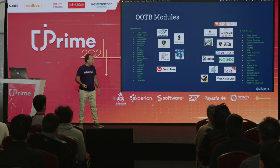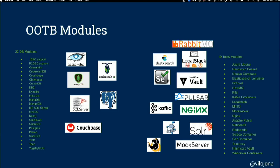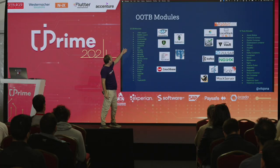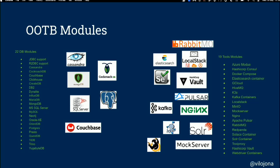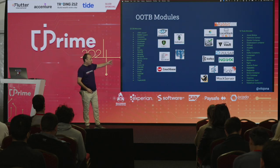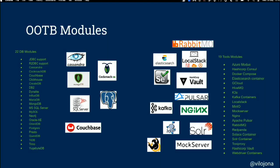One of the good things about test containers is not just that it provides the technology to connect Docker containers to your JUnit test — it's that they already provide many optimized modules. You can have Cassandra, ClickHouse, MongoDB modules already created in an optimized way. They also have modules for Nginx, Kafka, making everything very easy to use.